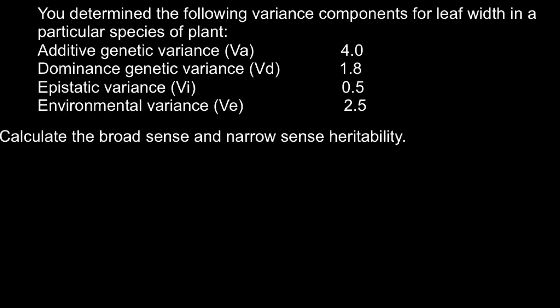In this video I'm going to explain what is broad sense and narrow sense heritability. I know that many students have trouble understanding the difference, so I hope in under 10 or 15 minutes I will explain it and you would know how to solve problems using broad sense and narrow sense heritability. Here is a problem: you have determined the following variance components for the leaf size in a particular species of plant. If you know how to solve this problem, you may stop the video here, try to solve it on your own, and when you are ready you can run the video again and compare your answers.